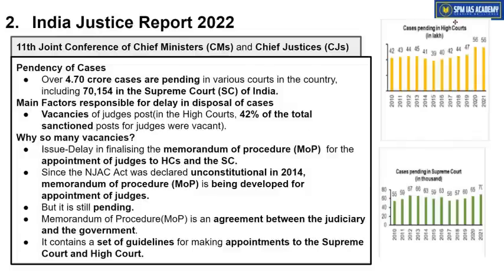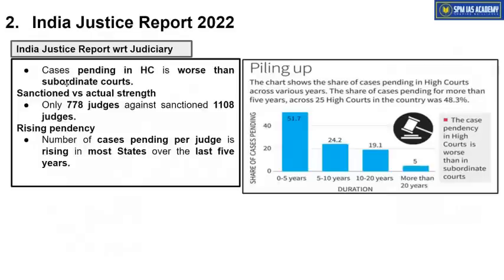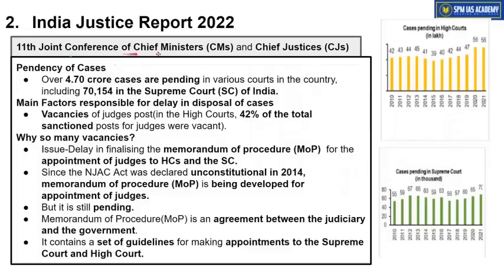Since judiciary is being discussed, let's collect some more important facts and data. In 2022, the 11th Joint Conference of Chief Ministers and Chief Justices was conducted. That conference produced some government-authenticated data, which is more reliable. It states that about 4.7 crore cases are pending in various courts of the country, including approximately 70,000 cases pending in the Supreme Court itself. About 42% of the total sanctioned seats in High Courts are vacant.